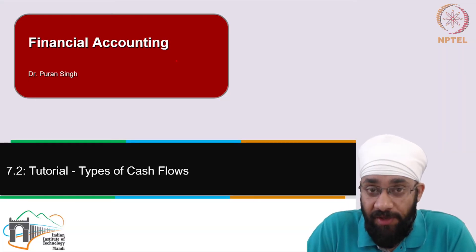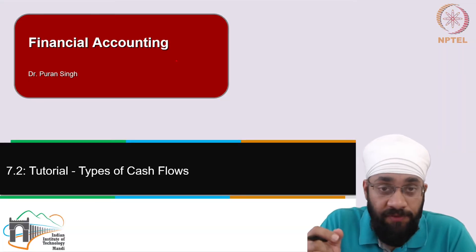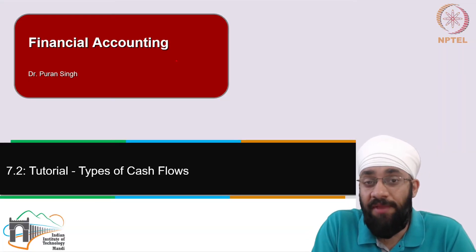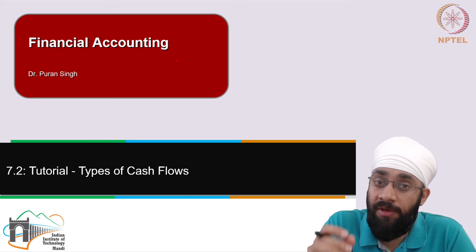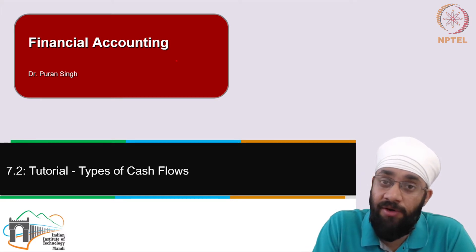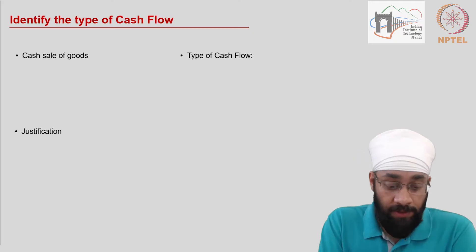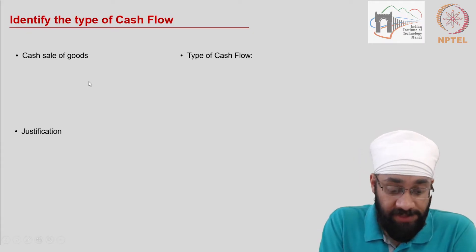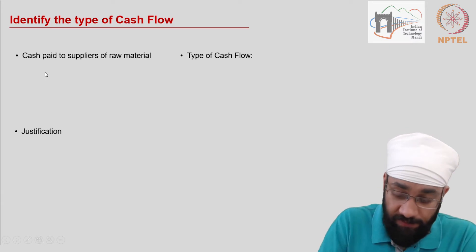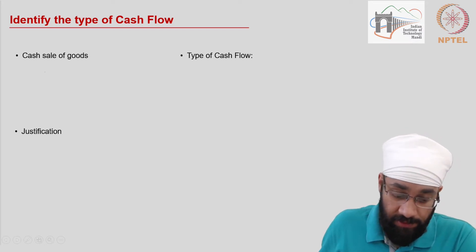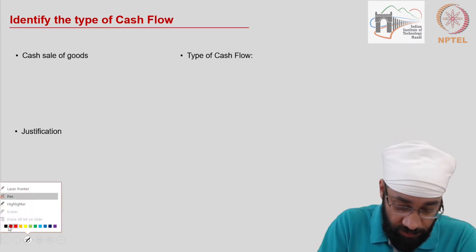This is a tutorial where we are going to look at a list of transactions and categorize them into investing, financing, or operating activities. The first item on the screen is cash sale of goods.